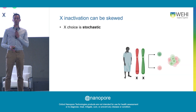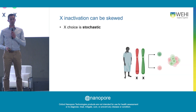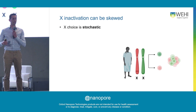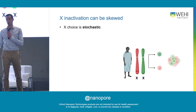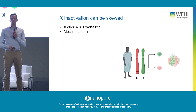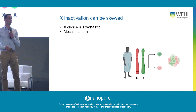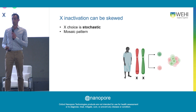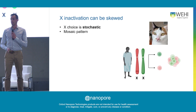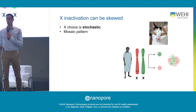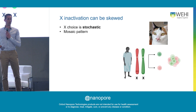X chromosome inactivation takes place early in development. It is a stochastic process, so either of the two Xs may undergo inactivation. What you end up with is a mosaic pattern — if you could label your cells by the X they have active as red or green, you'd have a mix of red and green cells. You can see that in the color of cats with patches of red fur and black fur.